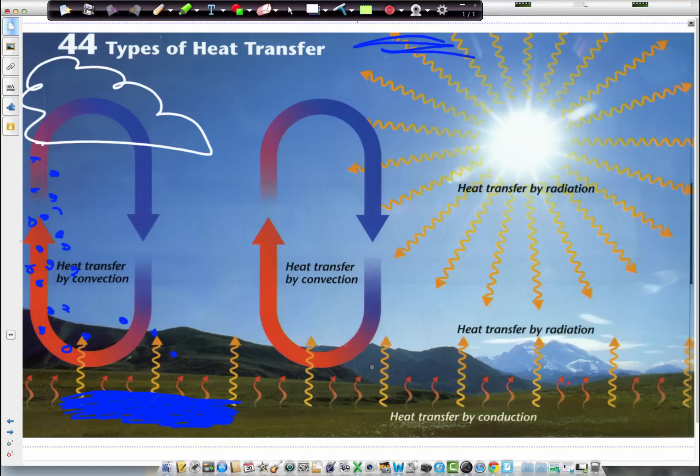So this idea of convection—warm rising air, cool sinking air—is what causes vertical wind, the vertical motion of the air in the atmosphere going up and down.